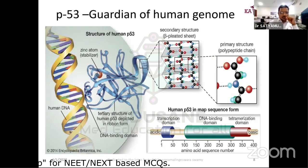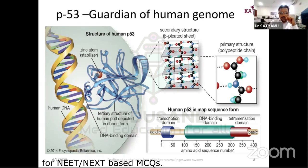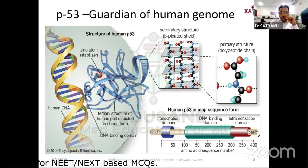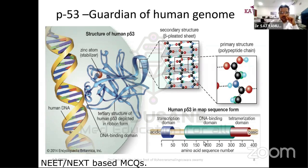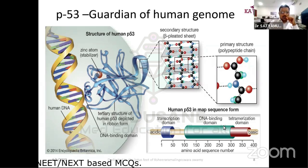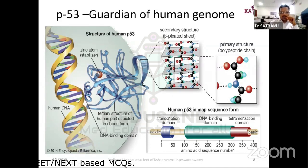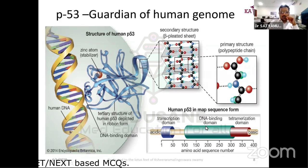The p53 gene product is a protein having different domains: an acidic domain, a transcription domain, a DNA-binding domain, and a tetramerization domain. The DNA-binding domain binds to DNA to prevent the cell cycle or direct the cell into apoptosis.